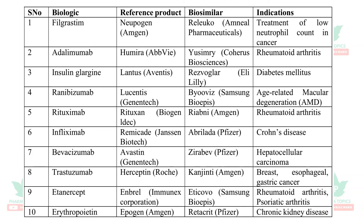Examples of biosimilars: Filgrastim was launched by Amgen as Neupogen; recently a biosimilar Releuko was approved — used in treatment of low neutrophil count in cancer. Adalimumab was launched by AbbVie as Humira; after patent expiry, the biosimilar Yusimry by Coherus Biosciences was approved for rheumatoid arthritis. Insulin glargine was launched by Aventis as Lantus; after patent expiry, Rezvoglar was launched by Eli Lilly for diabetes mellitus. Ranibizumab — original product Lucentis by Genentech; biosimilar Byooviz by Samsung Bioepis — used in age-related macular degeneration. Rituximab was launched as Rituxan by Biogen; Amgen has now launched Riabni after patent expiry — used in treatment of rheumatoid arthritis.